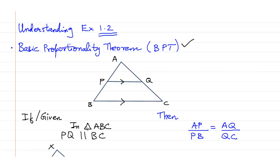Given triangle ABC where PQ is parallel to BC, if you apply the Basic Proportionality Theorem, then AP upon PB is equal to AQ upon QC. That is, AP upon PB is equal to AQ upon QC. This is the Basic Proportionality Theorem.